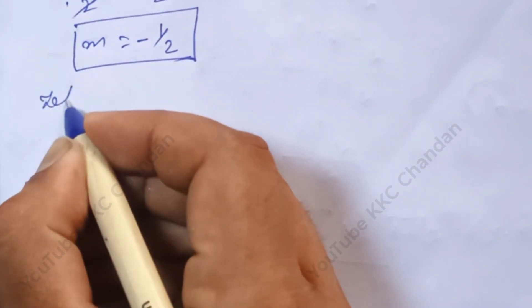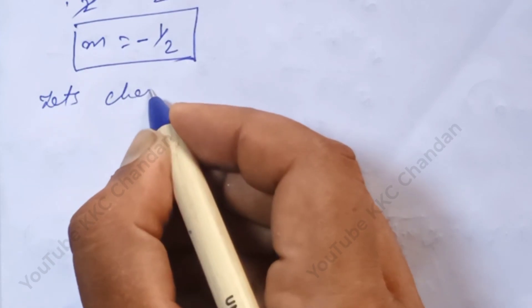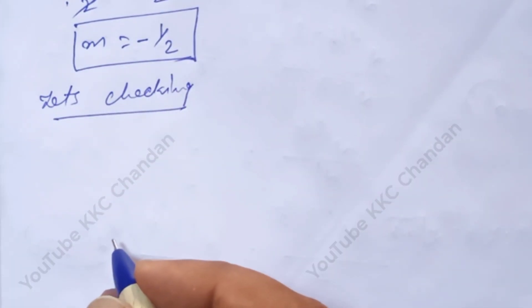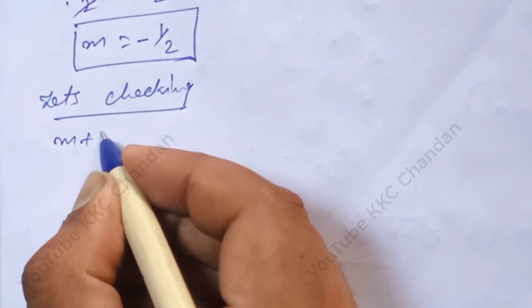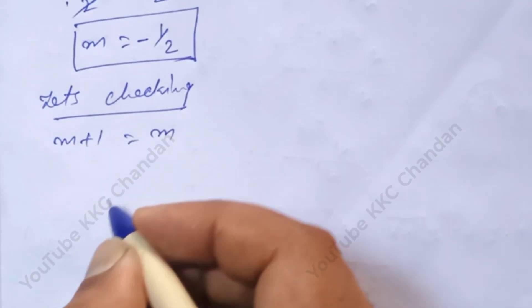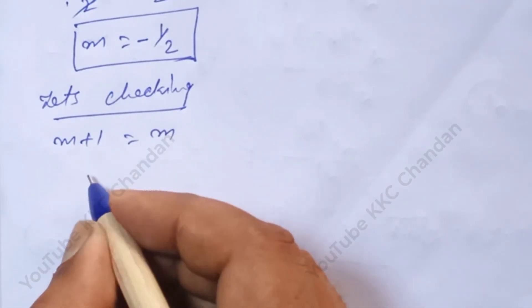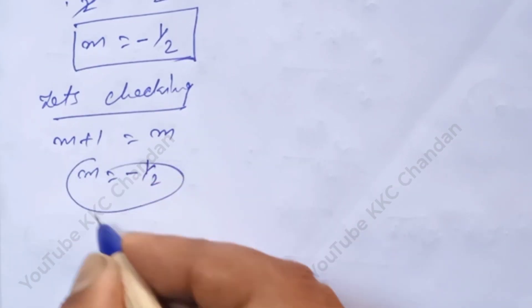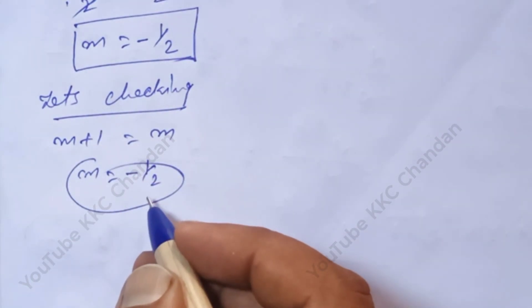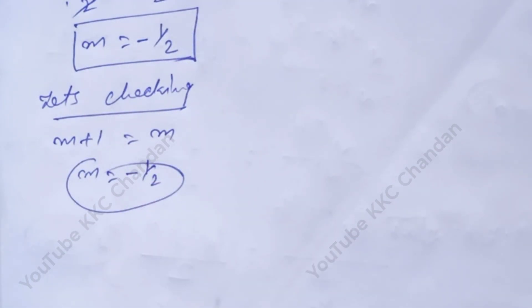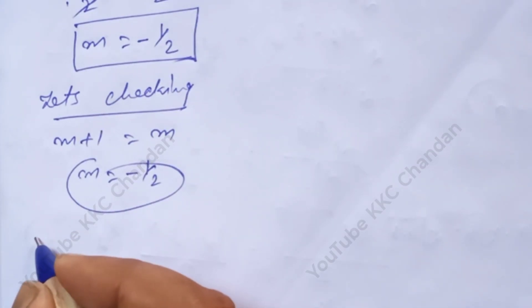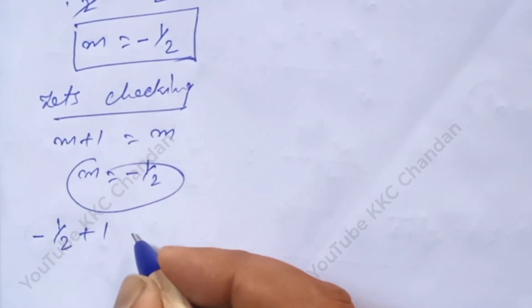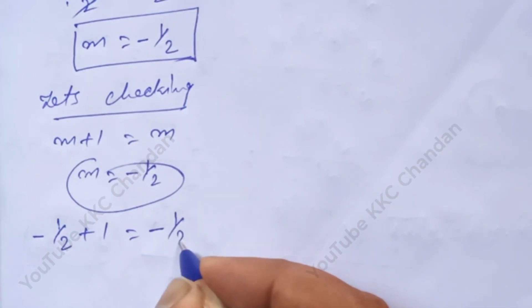Let's check this value. According to the question, √(m + 1) is equal to √m. We know that m is equal to minus 1 divided by 2. In place of m, we put minus 1 divided by 2.